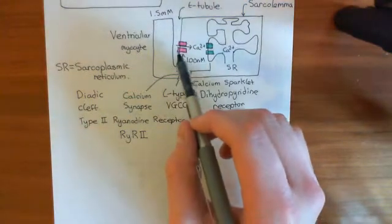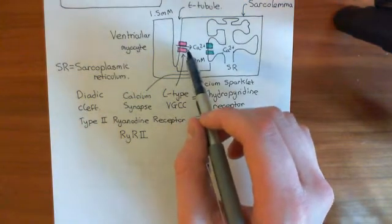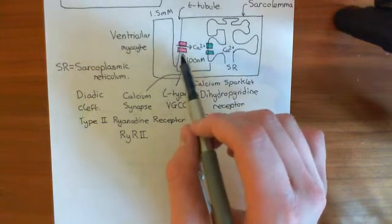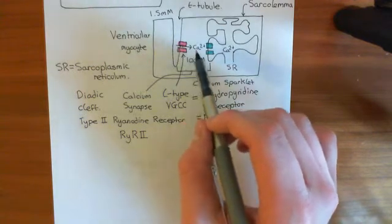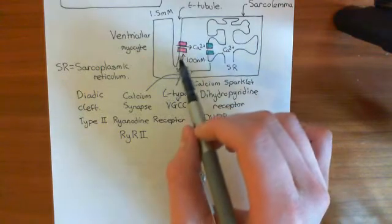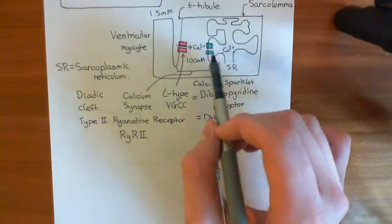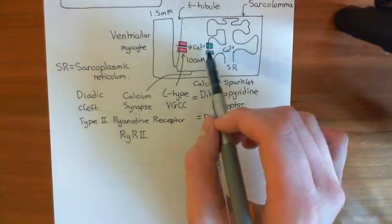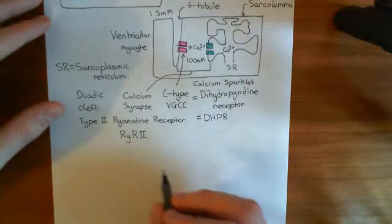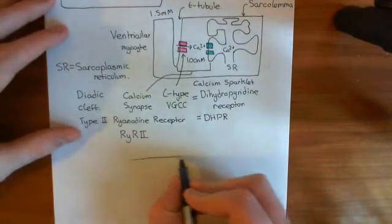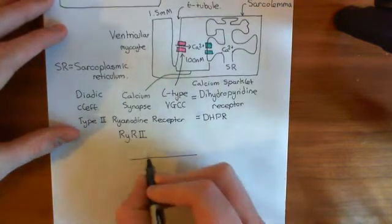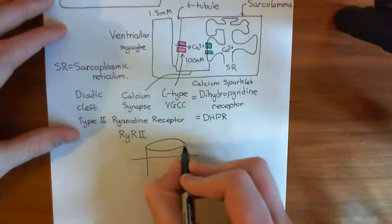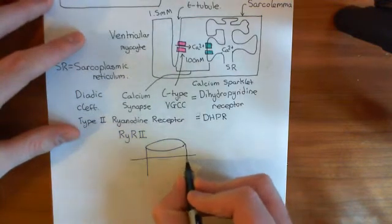What we've seen so far is that the L-type voltage-gated calcium channel, activated by the arrival of an action potential along the T-tubule membrane, releases calcium into the dyadic cleft — the calcium signalling space between the plasma membrane and the SR membrane. The calcium diffuses across the dyadic cleft and binds to type 2 ryanodine receptors. I now want to discuss the type 2 ryanodine receptor in more detail.